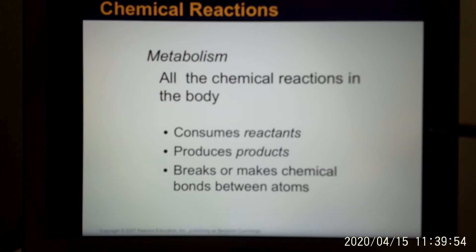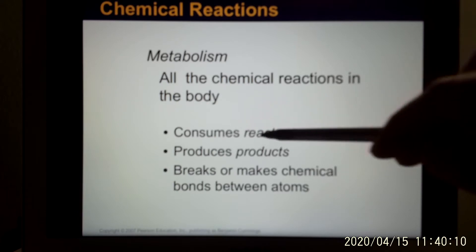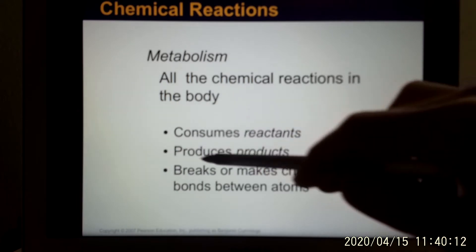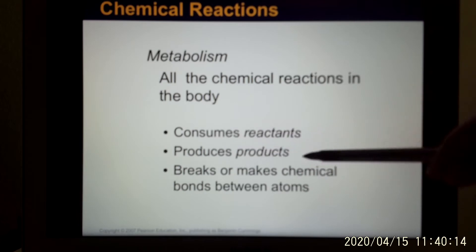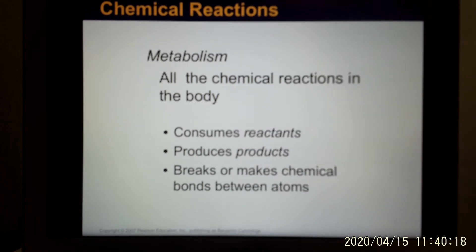In your body, you want to produce energy, the process is called metabolism. That's the chemical reaction happening in your body. Basically they just break the bond and reform the bond. Those molecules that participate in the chemical reaction, we call them reactants, and they produce products. In that process, they just break those chemical bonds between the atoms.